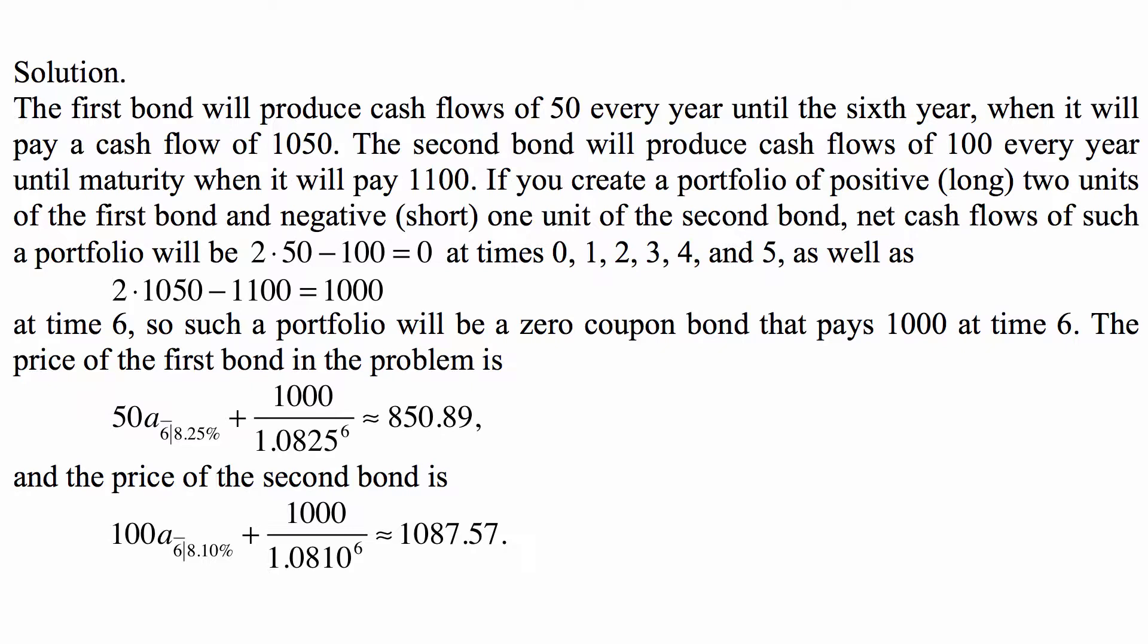Net cash flows of such a portfolio will be 2 times 50 minus 100, so 0 at times 0, 1, 2, 3, 4, and 5, as well as 2 times 1,050 minus 1,100, so 1,000 at times 6.